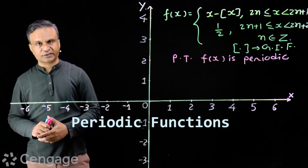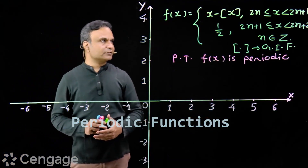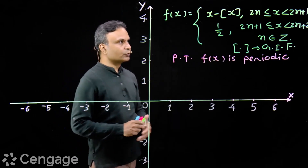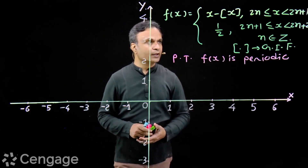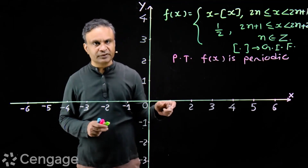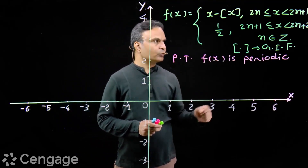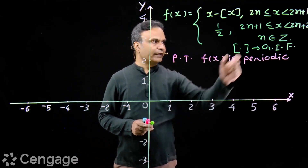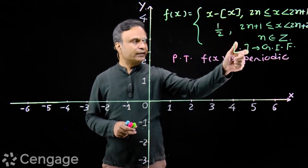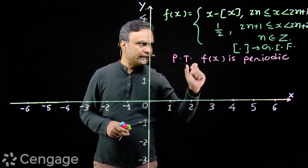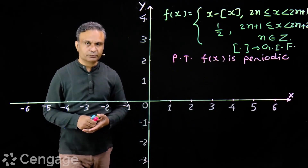We have a unique function. Function f is x minus greatest integer of x, for 2n less than or equal to x less than 2n plus 1, and 1/2 for 2n plus 1 less than or equal to x less than 2n plus 2, where n belongs to the set of integers. Square brackets represent the greatest integer function. We have to prove that function f(x) is periodic.